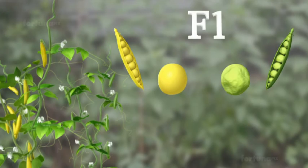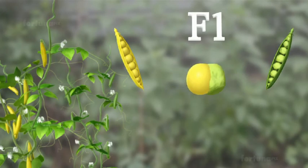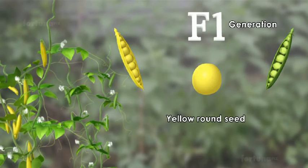In the F1, or first filial generation, all the plants yielded yellow round seeds.